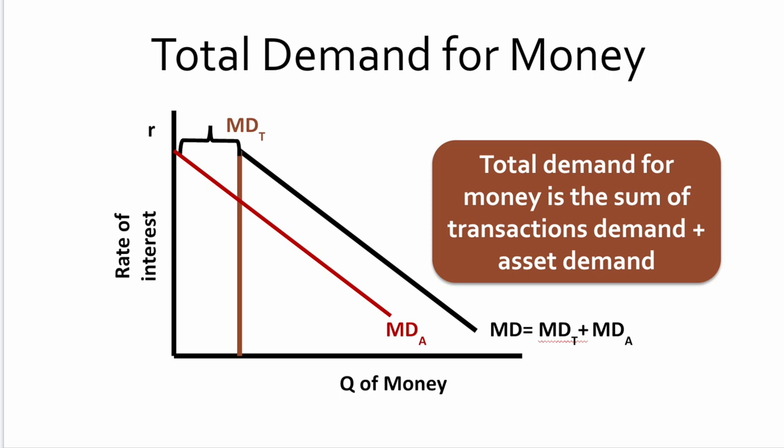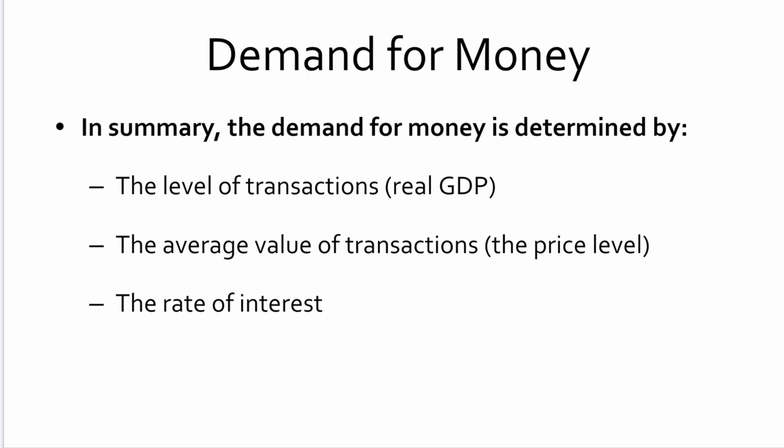So the total demand for money is a combination of the two — the transactions demand and the asset demand. In summary, the demand for money is determined by the level of transactions, real GDP, the average value of the transactions (the price level), and finally, the rate of interest.